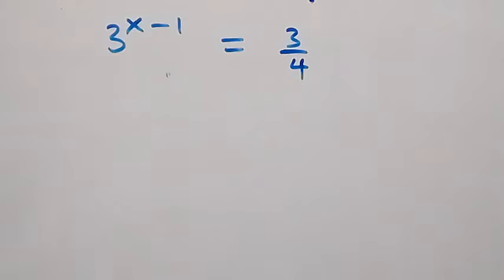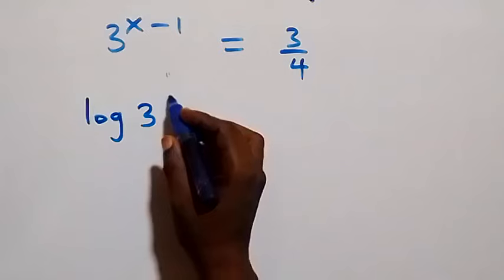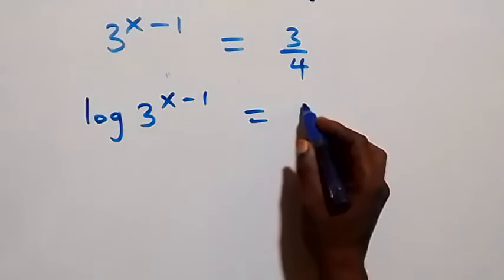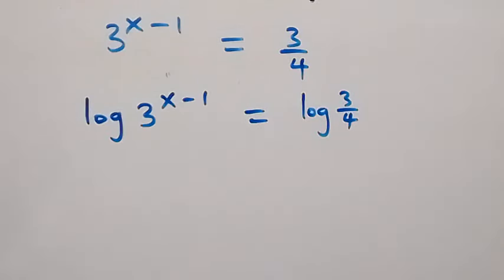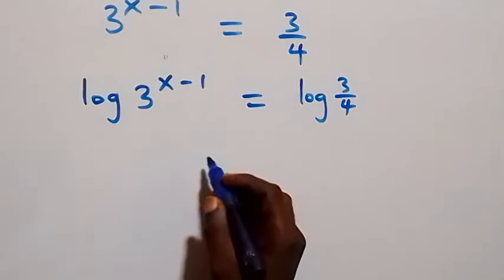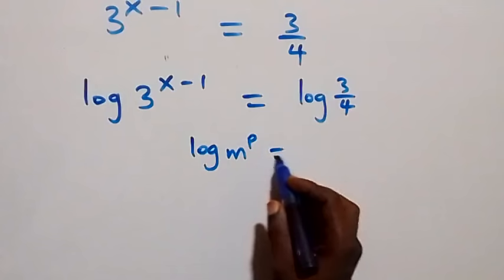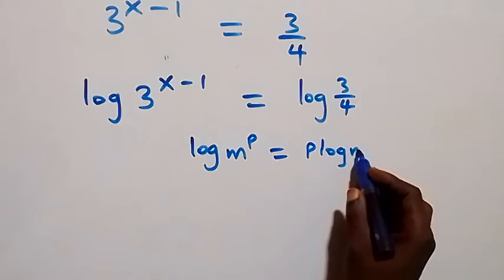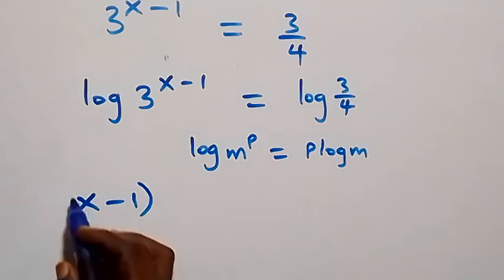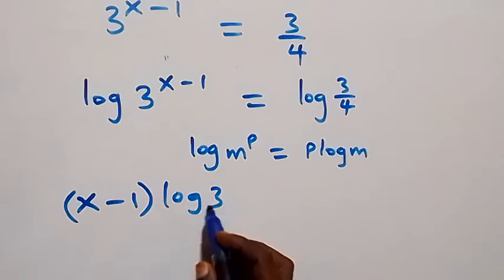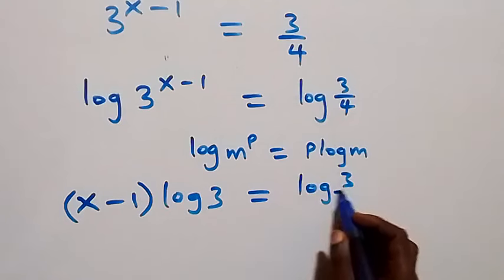From here, we can take the log on both sides. We have log of 3 raised to power x minus 1 equals to log of 3 over 4. Applying the power rule of logarithms — log m raised to power p equals p log m — the power here is x minus 1, so we have x minus 1 times log 3 equals to log 3 over 4.